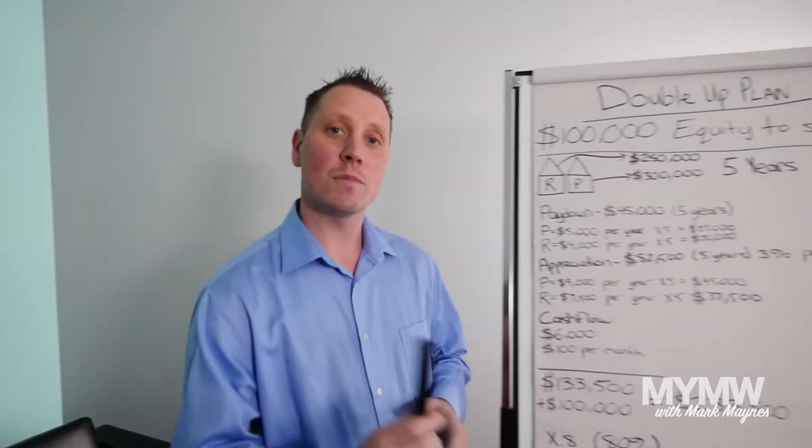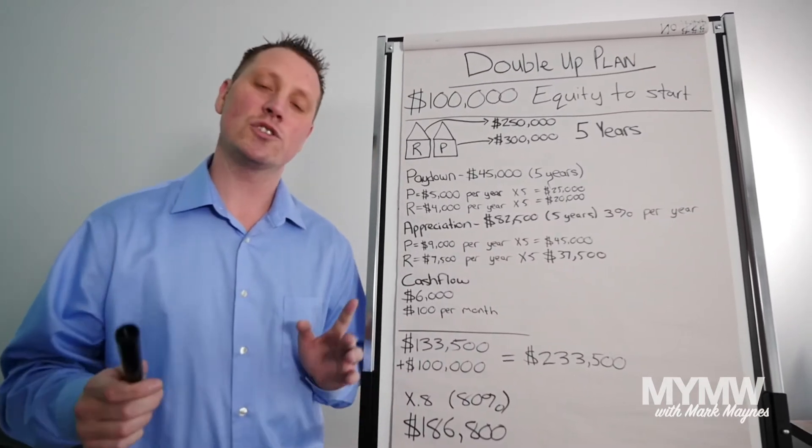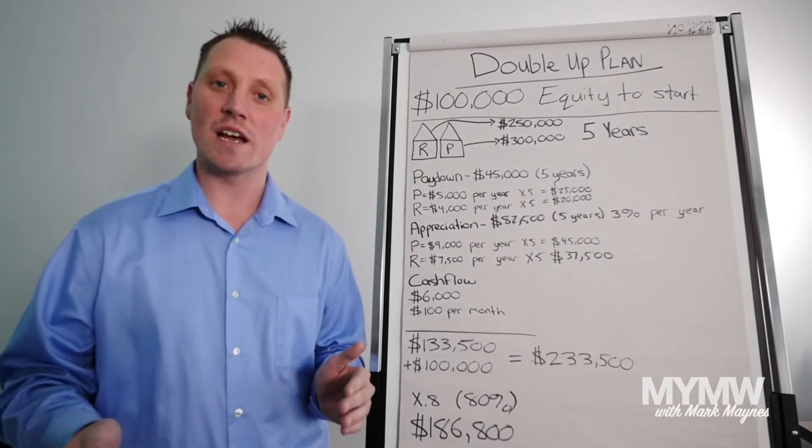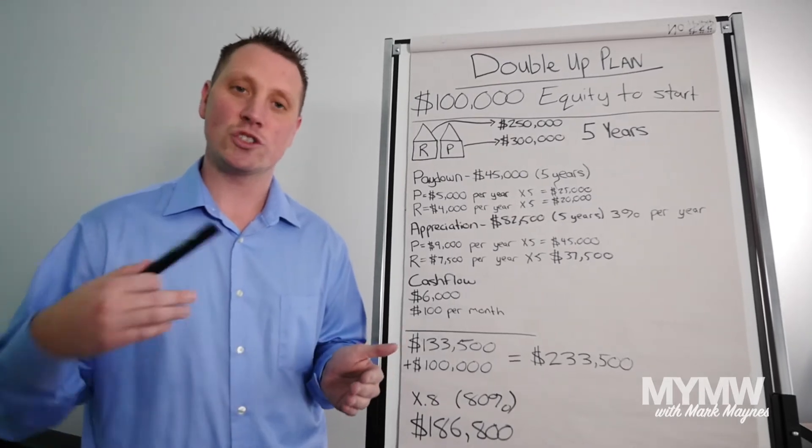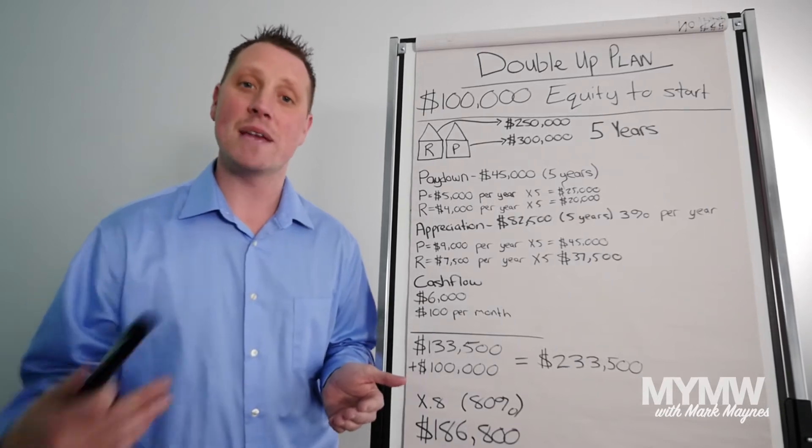I'm going to come up with a double up plan and before I get into it I want to make sure that I point out good debt. So there's two different debts: bad debt and good debt. Bad debt is things you buy that cost you money. Good debt such as real estate is things that you buy that make you money.